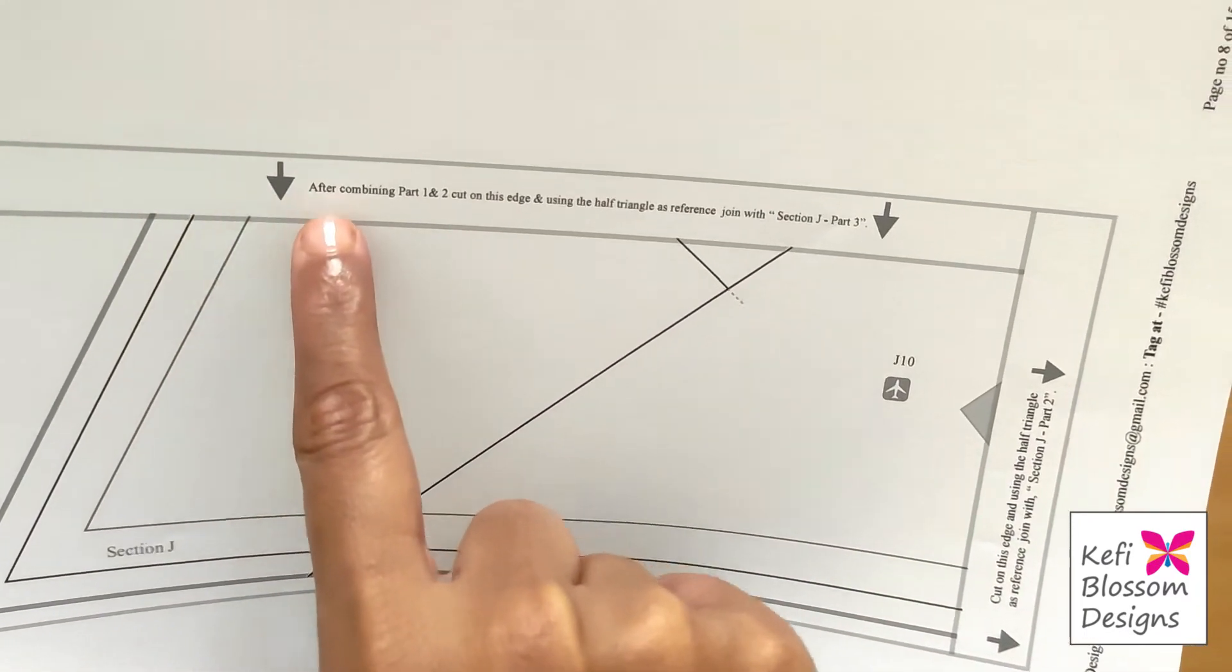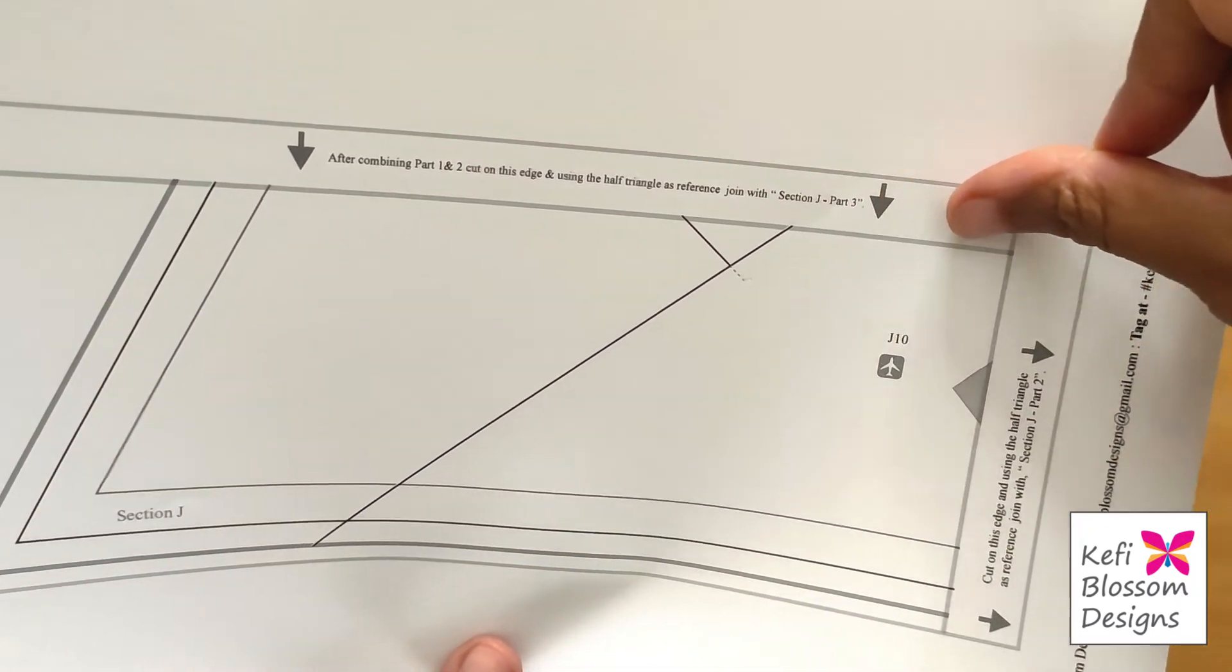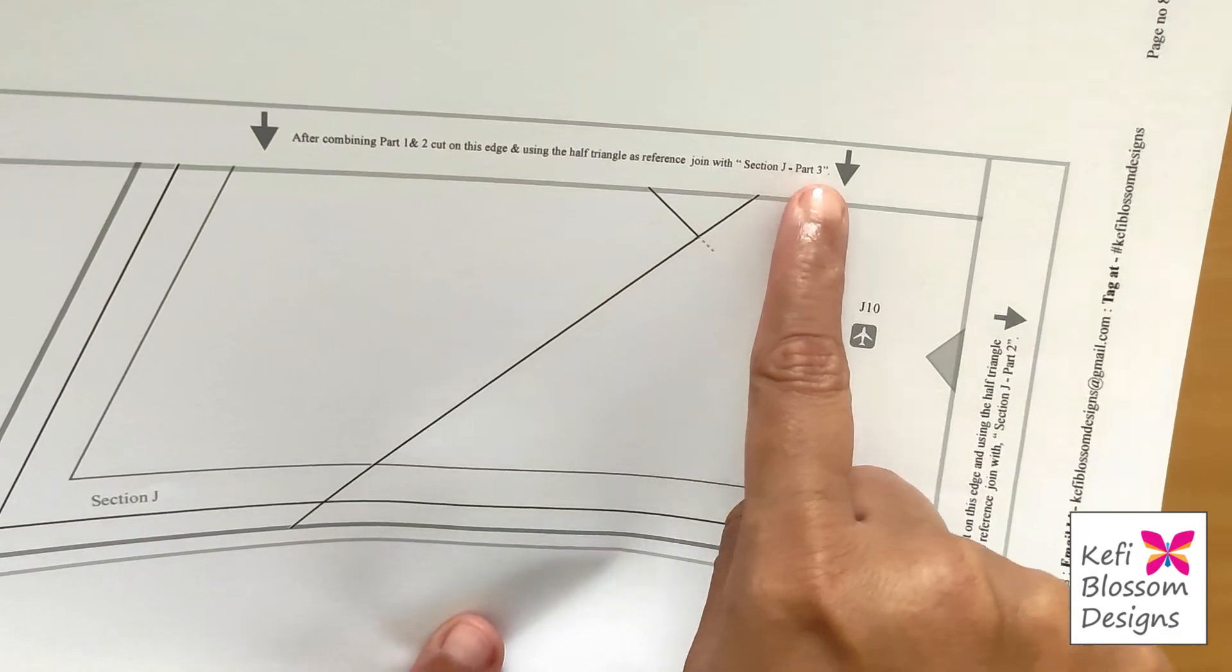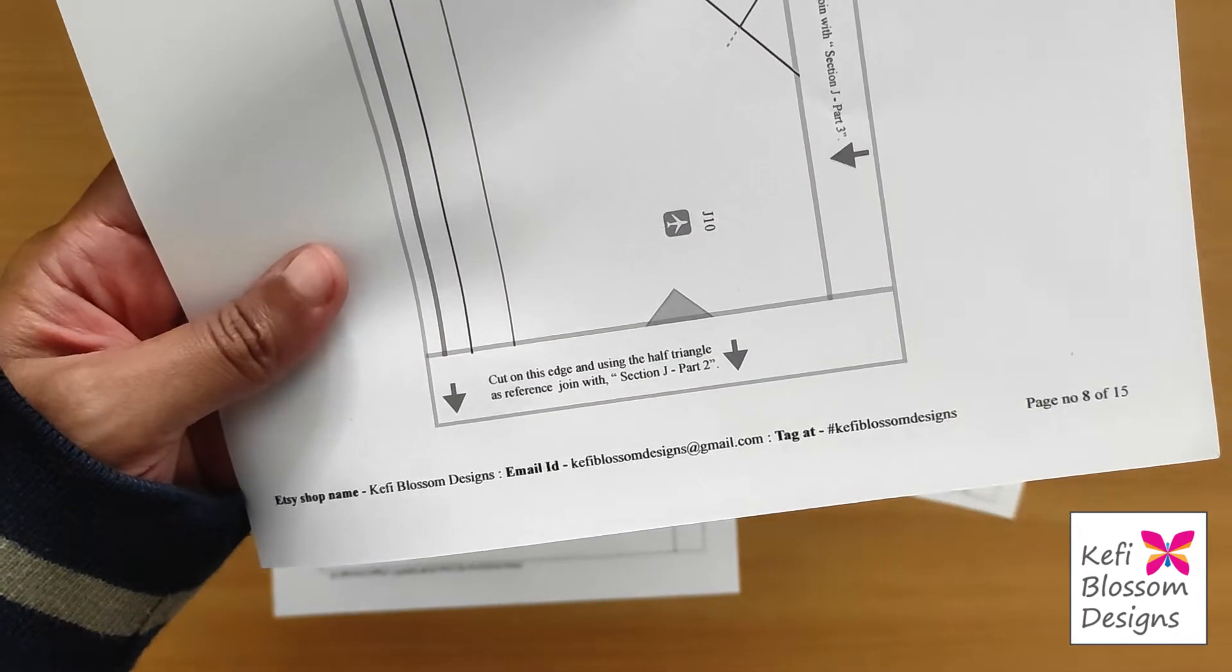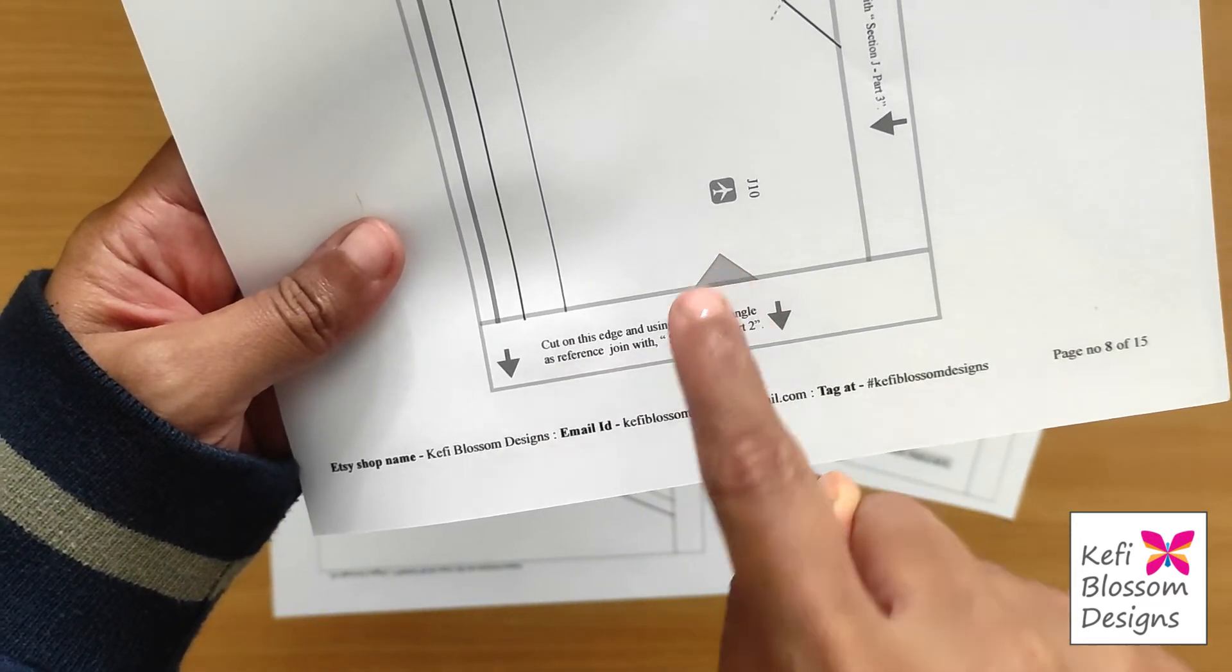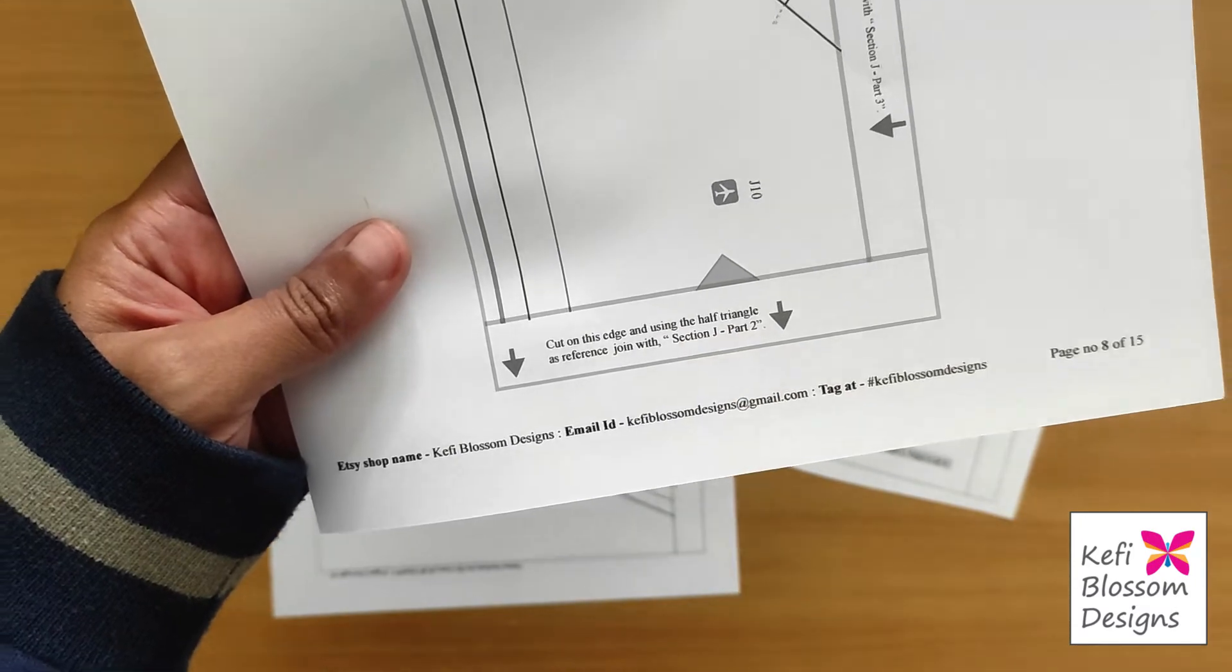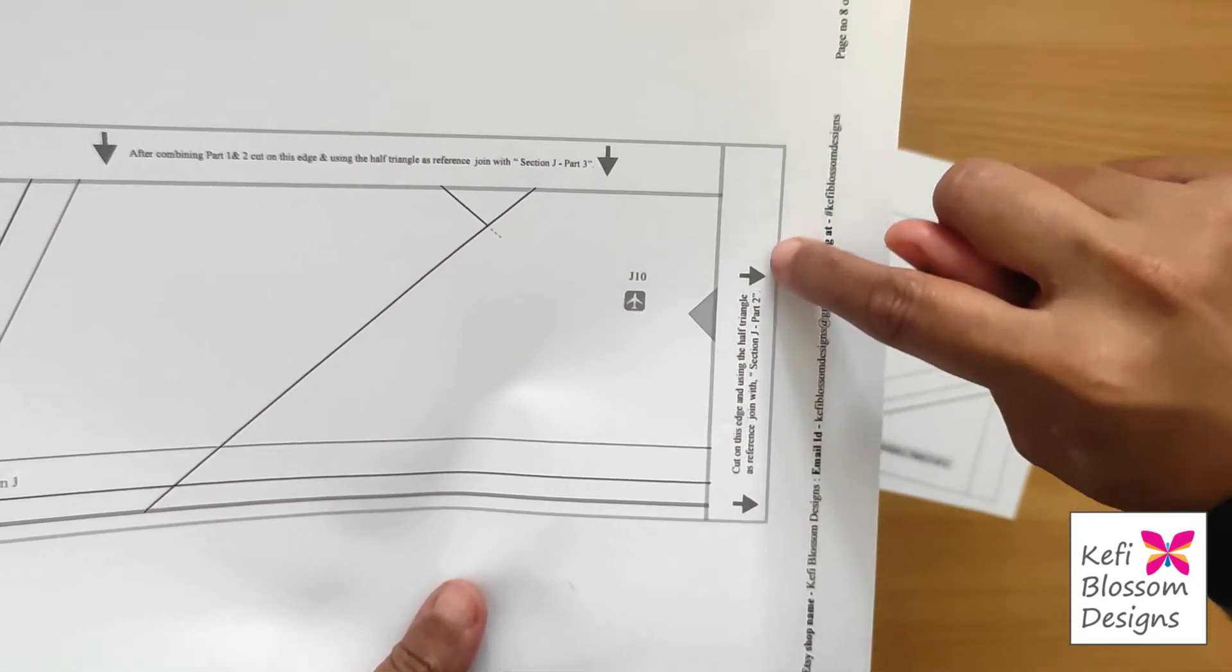Then you need to read the instructions. This instruction says after combining one and two, cut on this edge and then join with part three. And the next instruction says you need to cut on this edge. And using the half triangle as reference, I need to join with part two, which means I'll cut on this line first.